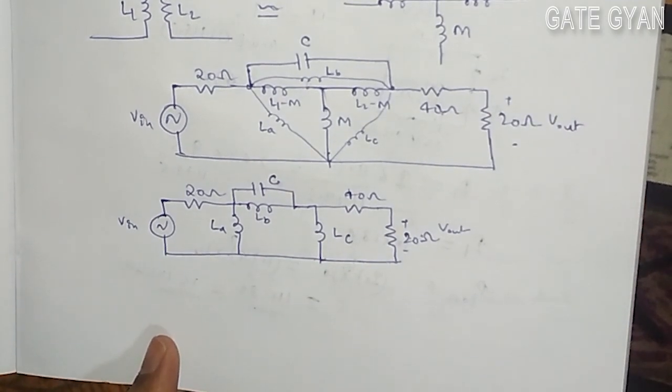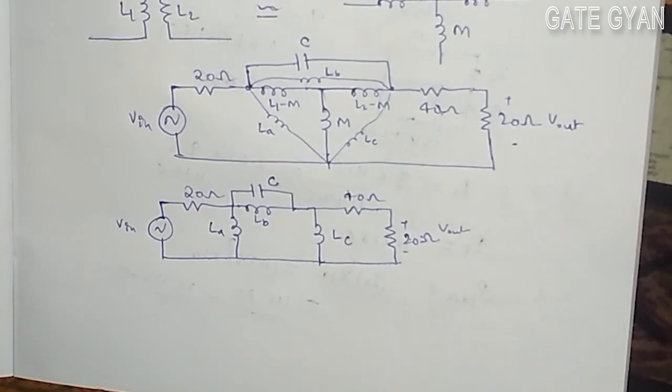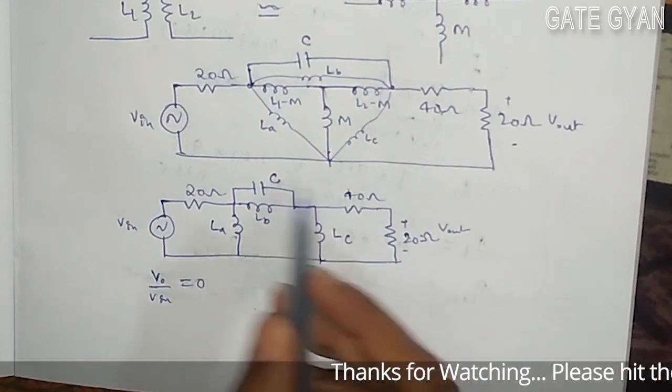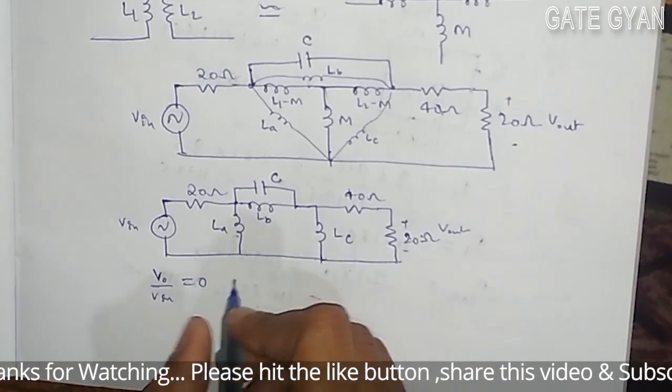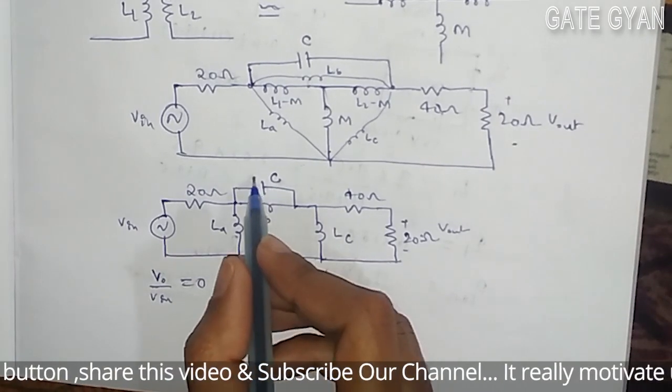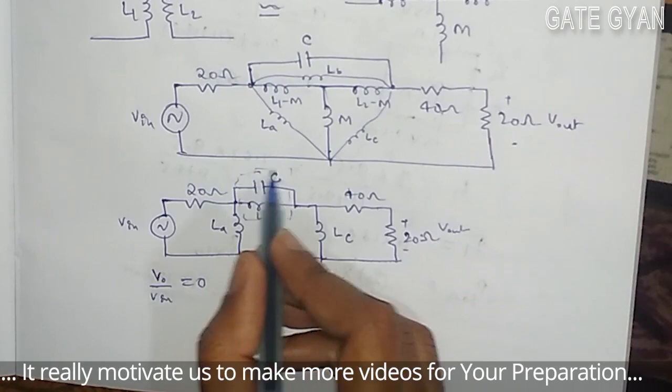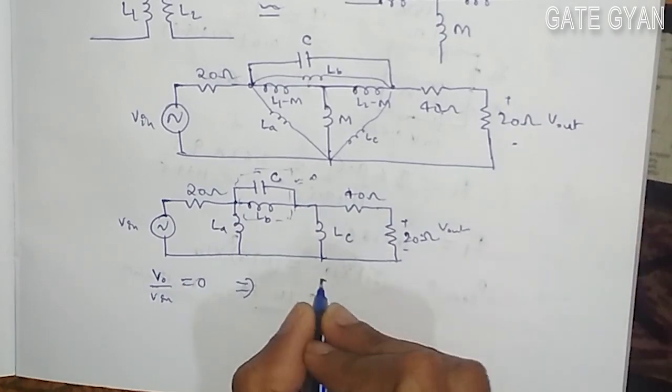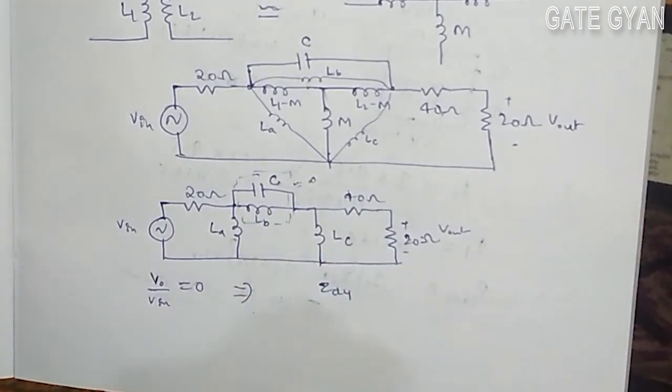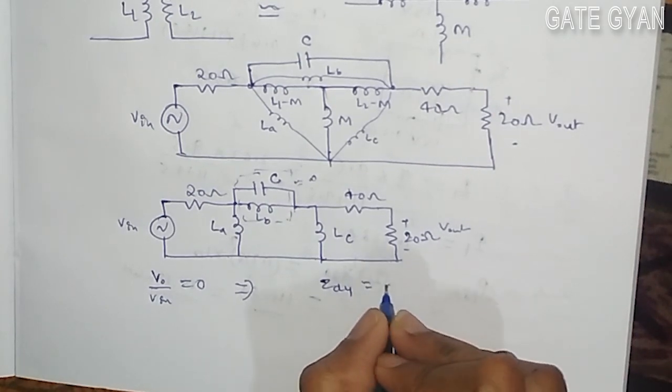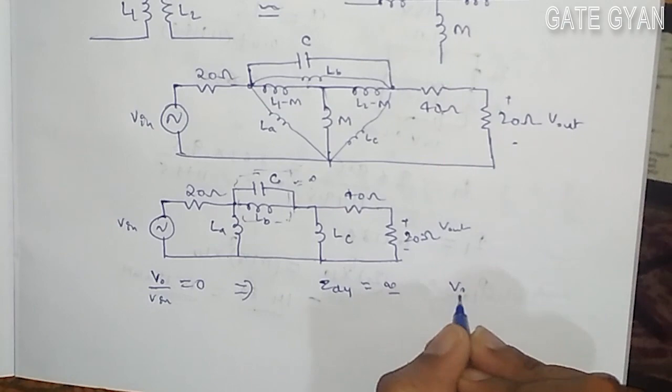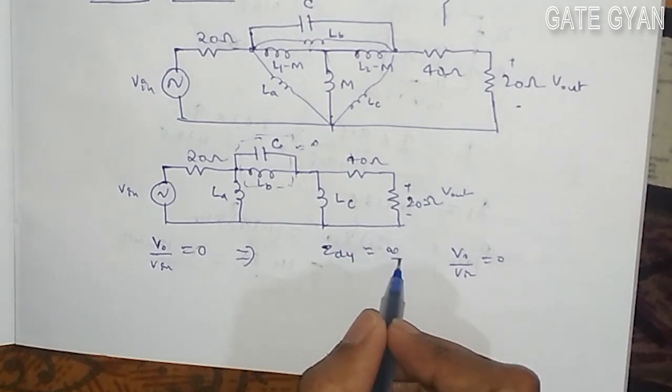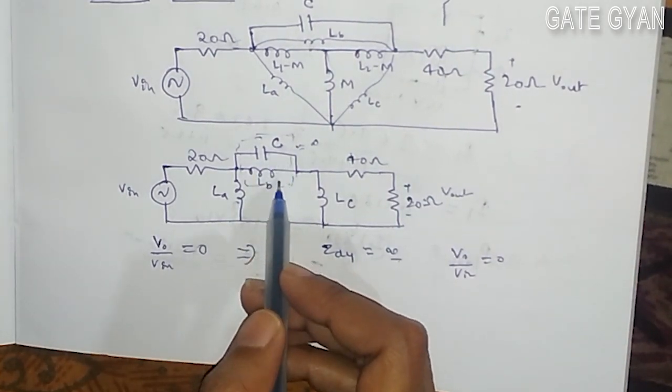As we have given that this Vout by Vin is going to be equal to 0, so here in this circuit we can say that this Vout by Vin will be 0 only when this impedance, this whole impedance of parallel combination of LB and C is going to be 0. So we can say this is an LC balance. We can say that dynamic impedance of this circuit is going to be infinity when Vout by Vin equals 0. So dynamic impedance is infinity.